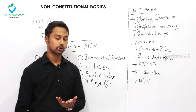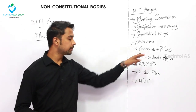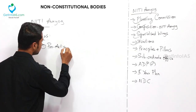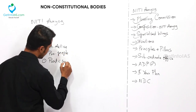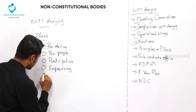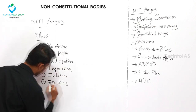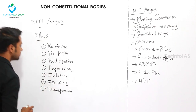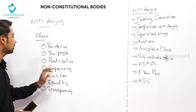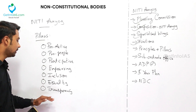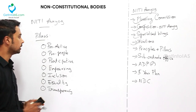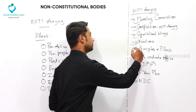NITI Aayog also has seven pillars. A way to remember them is Triple P, E, I, E, T: Proactive, Pro-people, Participative, Empowering, Inclusion, Equality, and Transparency. These pillars are largely self-explanatory.